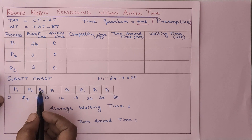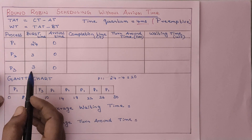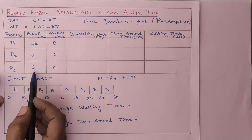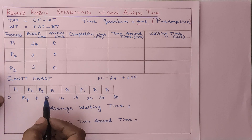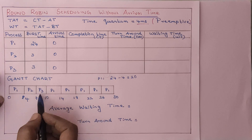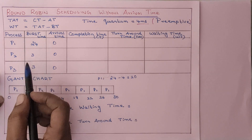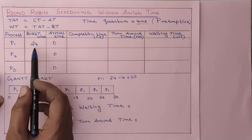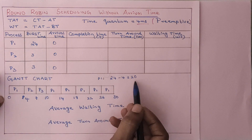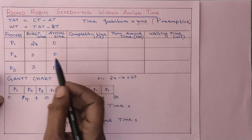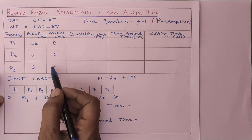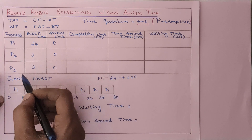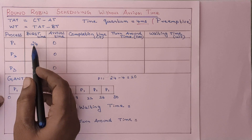After P2 completes its job, it will move to process P3. P3 also has a burst time of 3 milliseconds, so from 7 to 10, process P3 will execute. Now at the end of the first cycle, P2 and P3 have completed their execution, but still 20 milliseconds of P1's process is left.